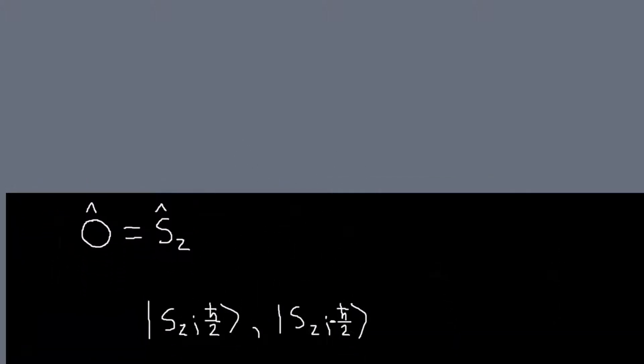Those two values will be either h-bar over two or minus h-bar over two, commonly referred to as spin up and spin down. The value h-bar over two isn't so important, the point is there's two different states. But basically h-bar is like a fundamental unit of angular momentum, and that's times one-half because it's a spin one-half particle.